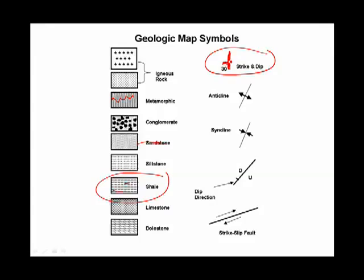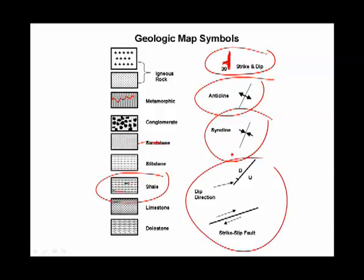But you have to show which way it's dipping and the angle of dip. So that's the short part of the T, and there'll be a number. Also, we have symbols for anticlines and synclines, as well as for various kinds of faults, which we'll discuss later.